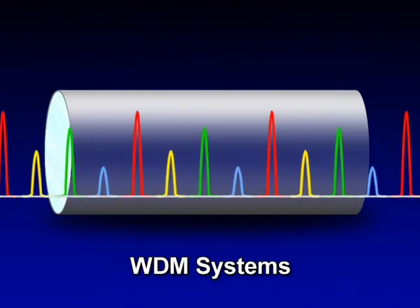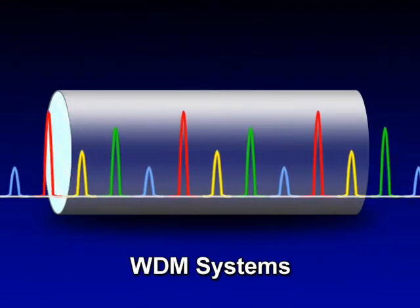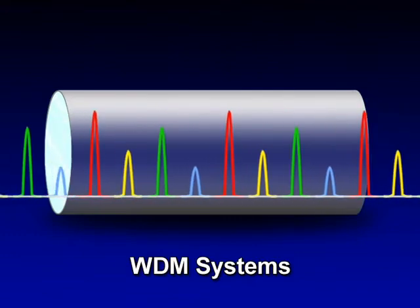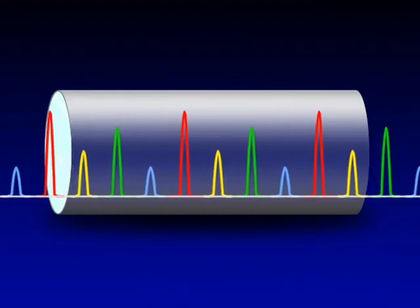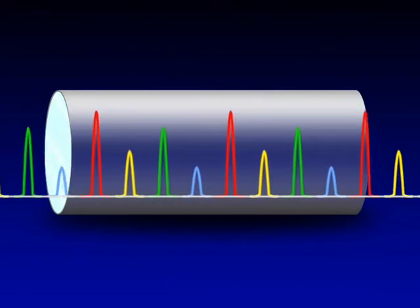In WDM systems used in most optical communications, optical signals of multiple wavelengths pass through a single optical fiber. However, optical signal levels are not uniform.